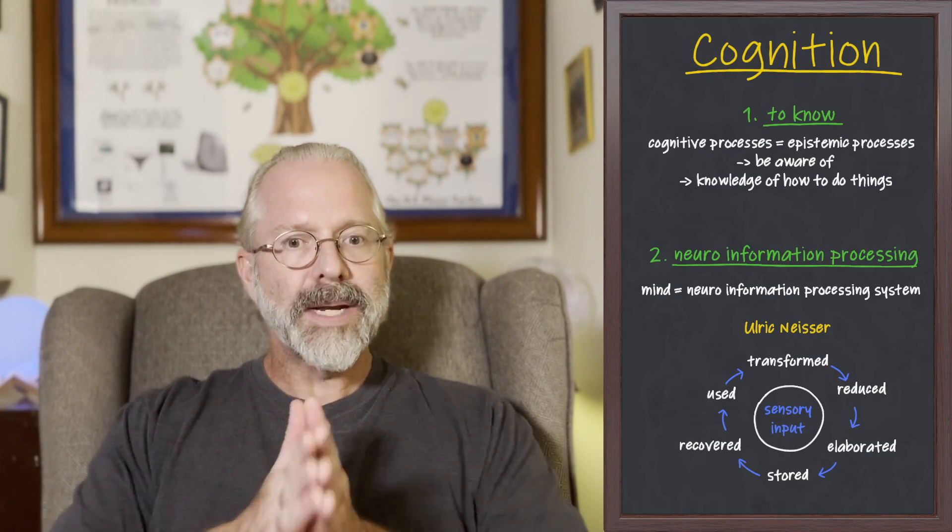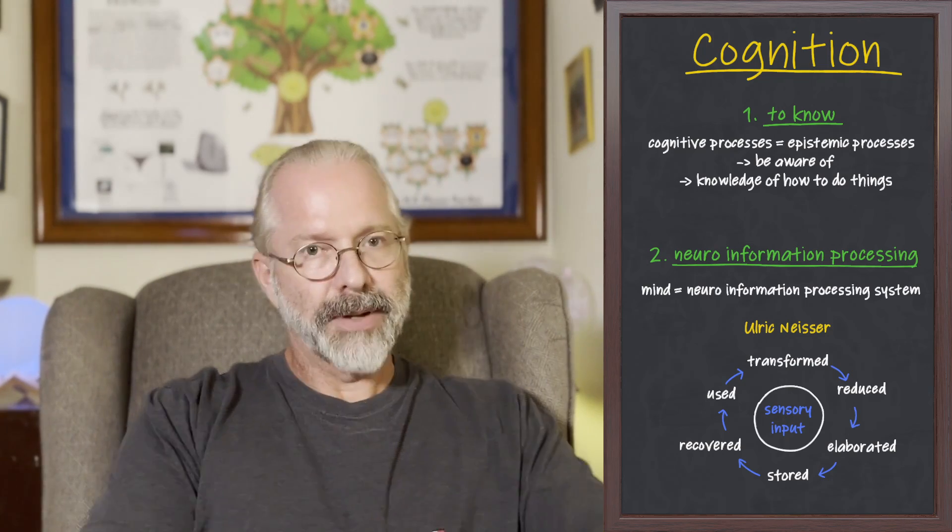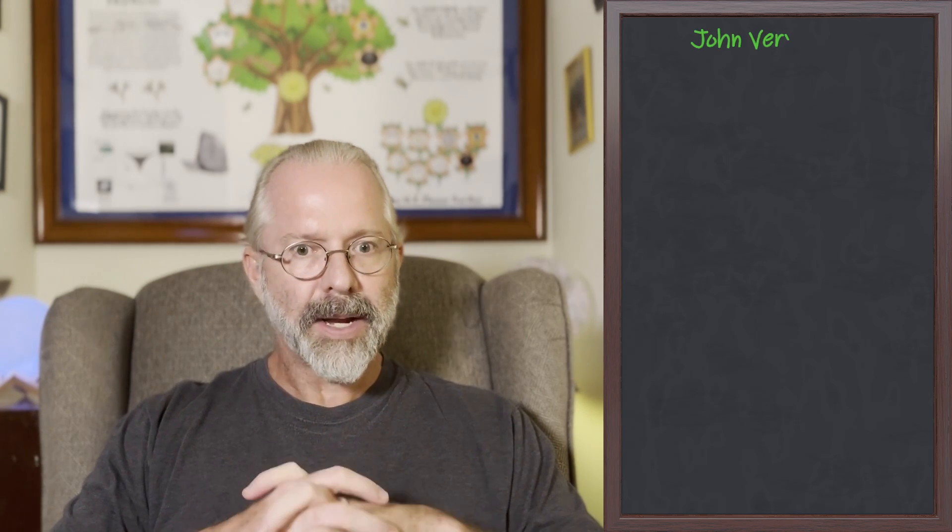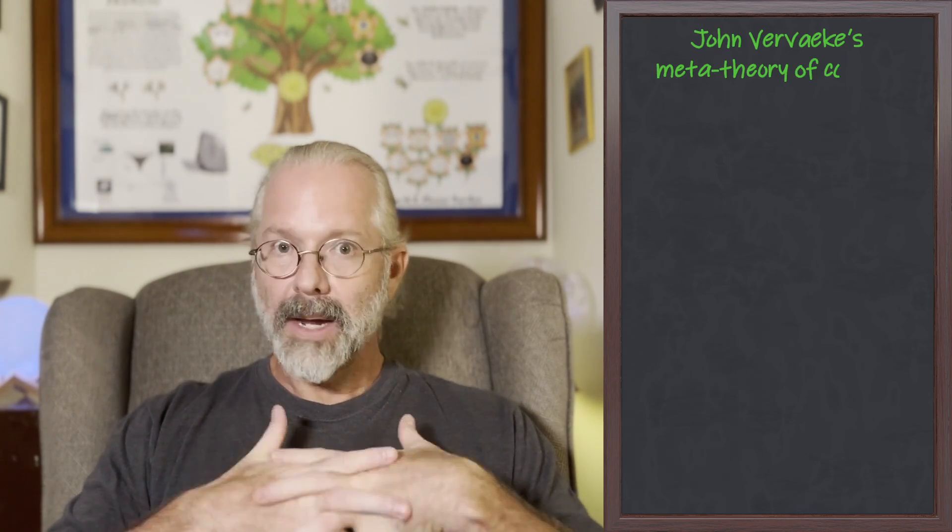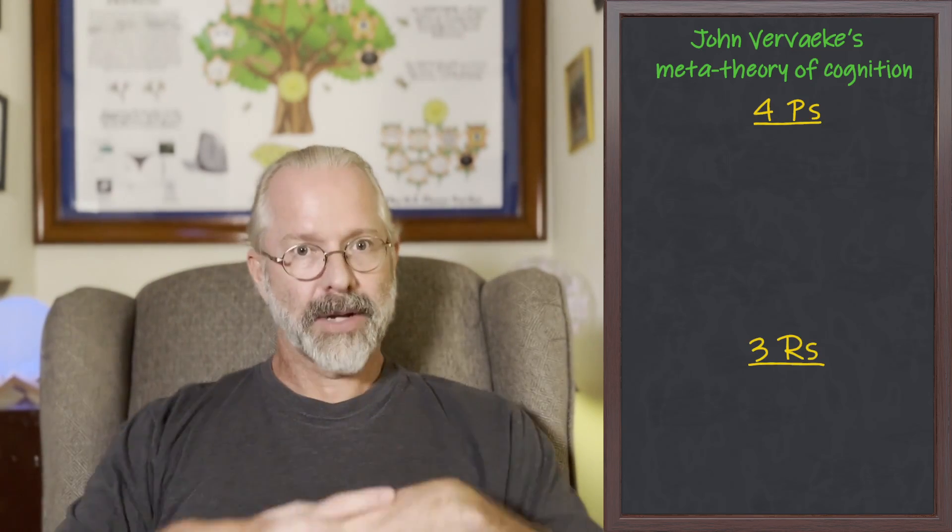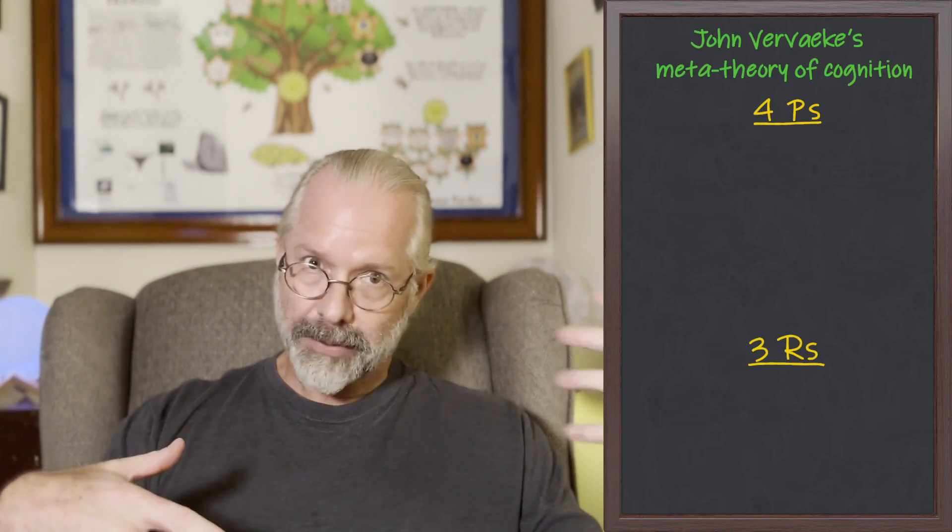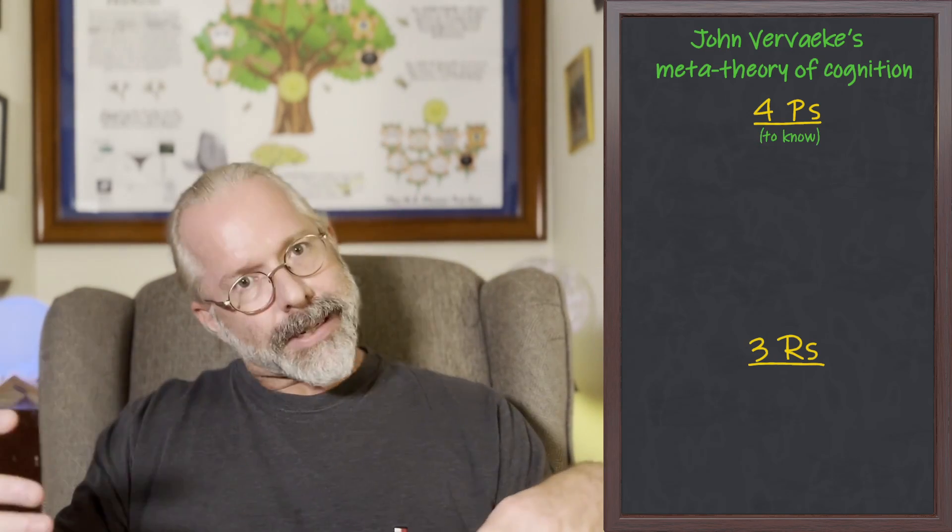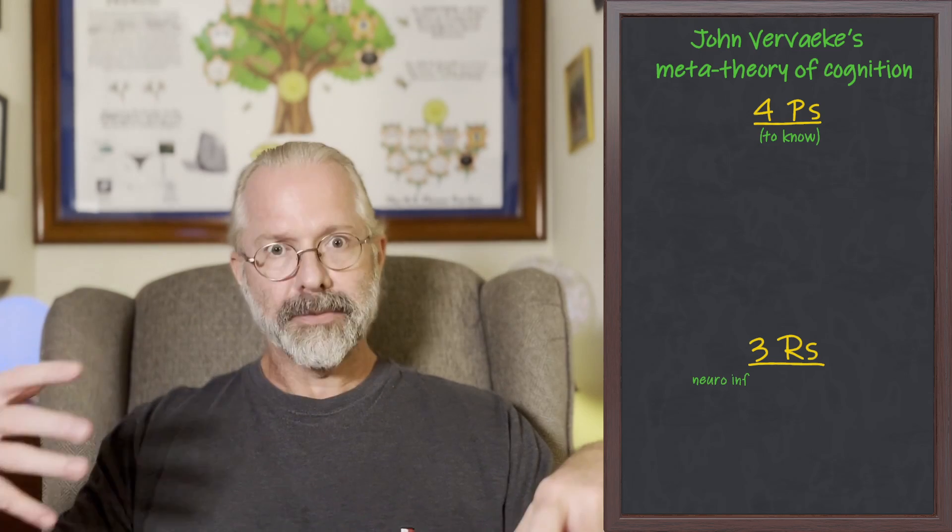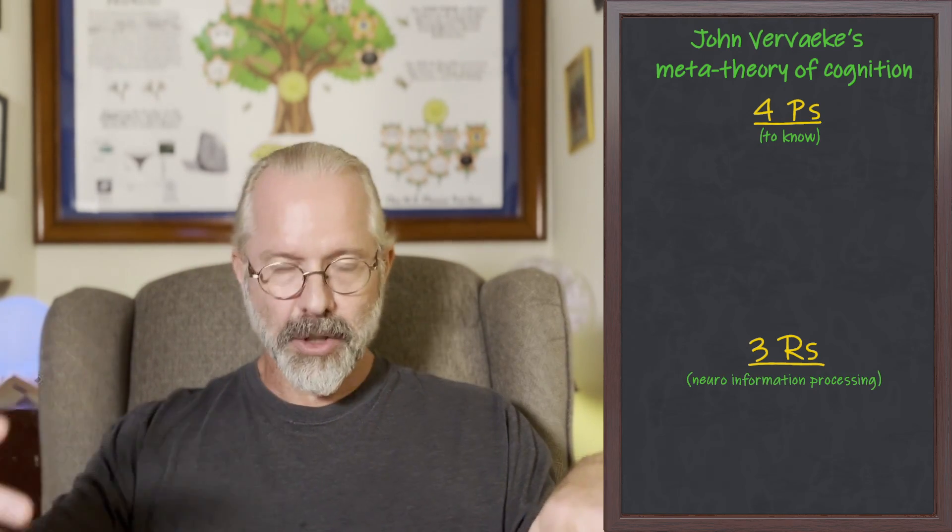So, we need to differentiate the referent of cognitive as knowing and the referent of cognitive as information processing. And to do that, we can turn to the work of the cognitive scientist John Vervaeke. He has developed a brilliant 4P-3R meta-theory of cognition that enables us to understand both cognition in relationship to knowing and cognition in relationship to neuro-information processing, particularly the way neuro-information processing is functionally organized.